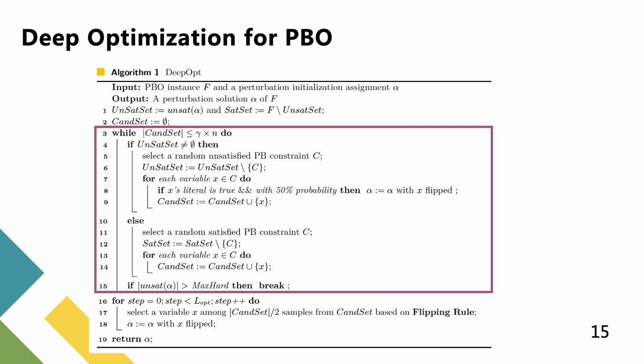At each iteration, if unsatisfied set is not empty, the algorithm preferentially chooses a random unsatisfied PB constraint C from unsatisfied set, and puts all variables of C into candidate set. For each variable belonging to C, if x's literal in C is true, it occurs with 50% probability to flip x.